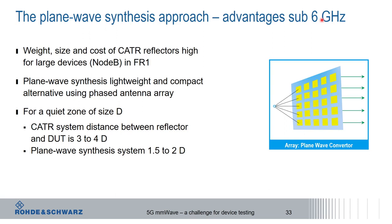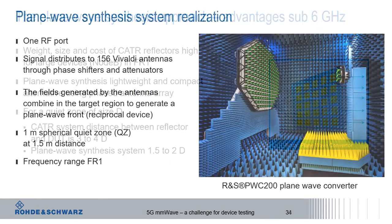Another advantage of the plane wave synthesis approach is the reduced distance requirement: whereas in a CATR the reflector-to-device distance is typically three to four times D, a plane wave converter can operate at half that distance. Rohde & Schwarz offers the PWC 200, which features 156 Vivaldi antennas in a ring connected via phase shifters and amplifiers, with one RF cable input. It generates a one-meter quiet zone at a device-to-converter distance of only 1.5 meters.